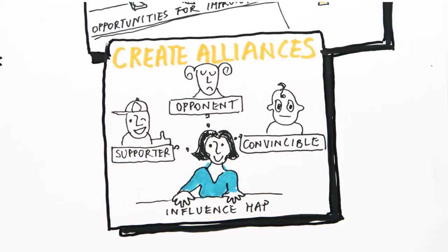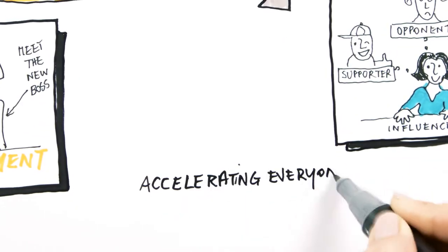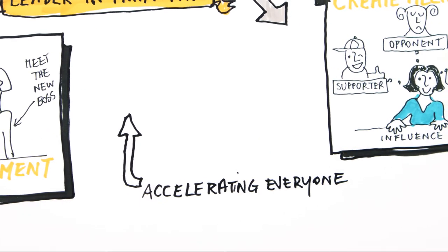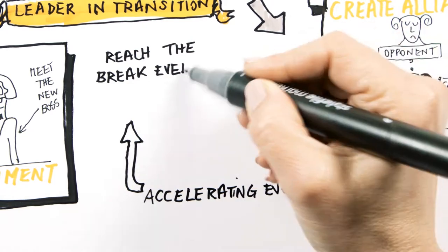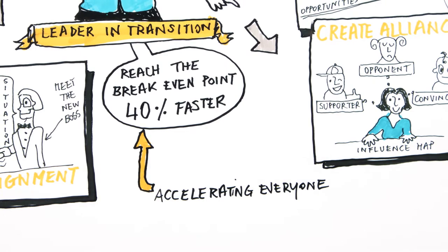By following the first 90 days transition roadmap, you will get up to speed faster and better. Leaders who are systematic in planning their transitions reach the break-even point, that's the point at which you really begin to add value, 40% faster than those who don't.